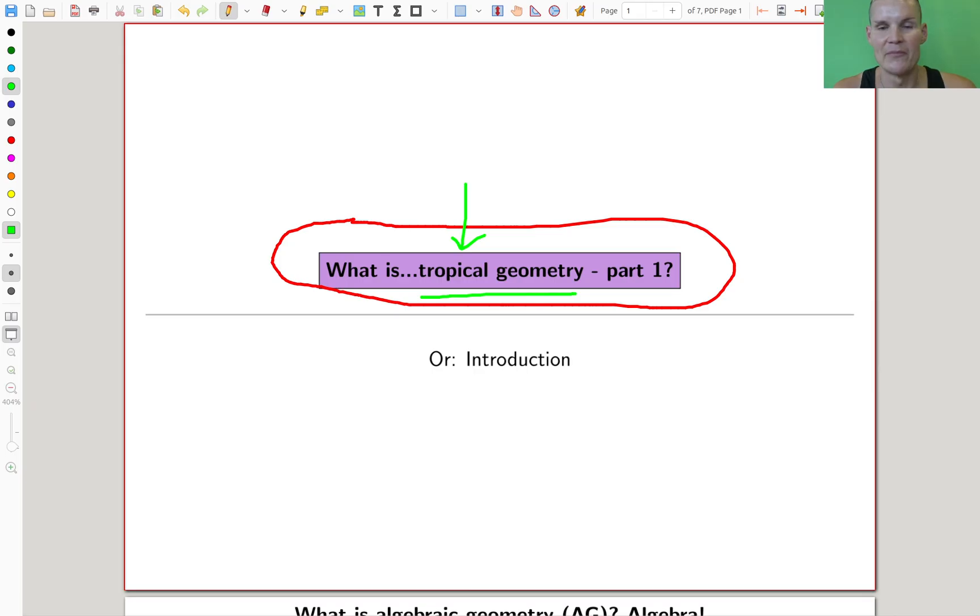Tropical geometry sounds very fancy, sounds very nice, sounds like something I would like to learn. It was apparently contributed by French mathematicians who think of Brazil as being tropical, and it was in honor of a Brazilian computer scientist. So that's where the tropical comes from. There's no mathematical meaning, it's just a really good choice of word.